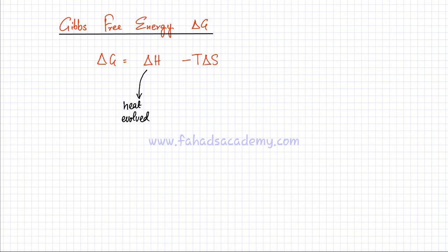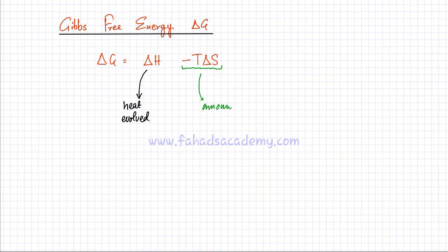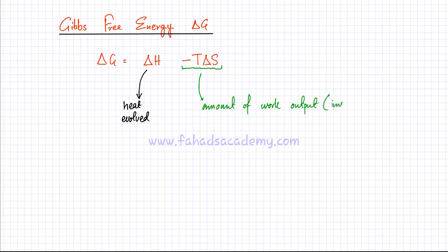Now this term T delta S: T delta S is the amount of work that is output — or it could be the amount of work input, depending on the sign. So it's the amount of work output or input due to entropy change.